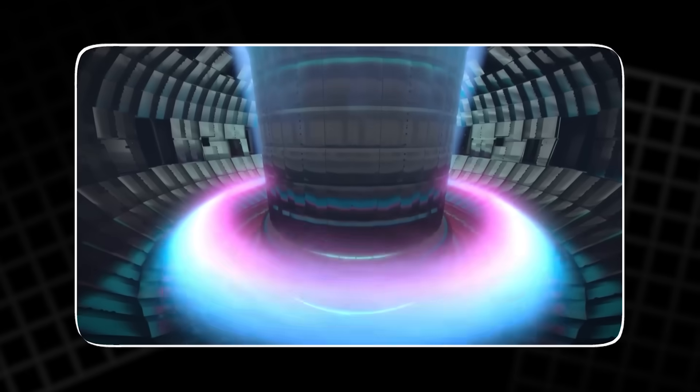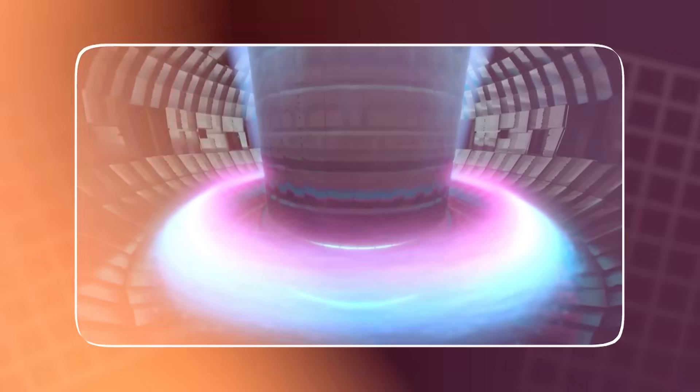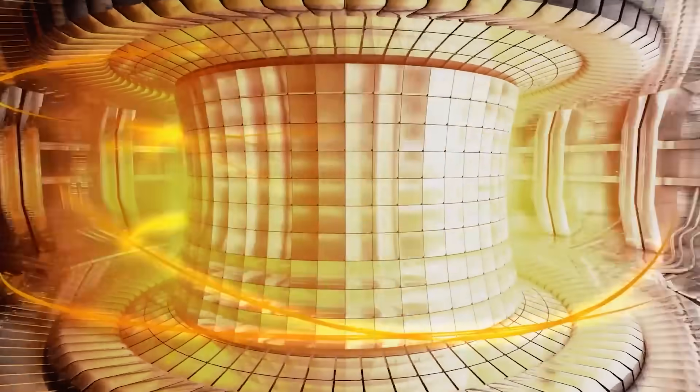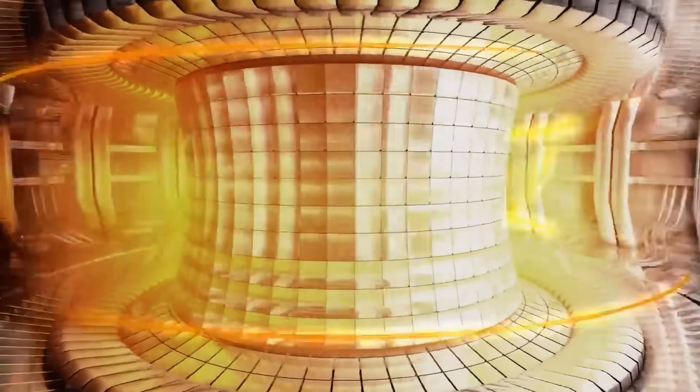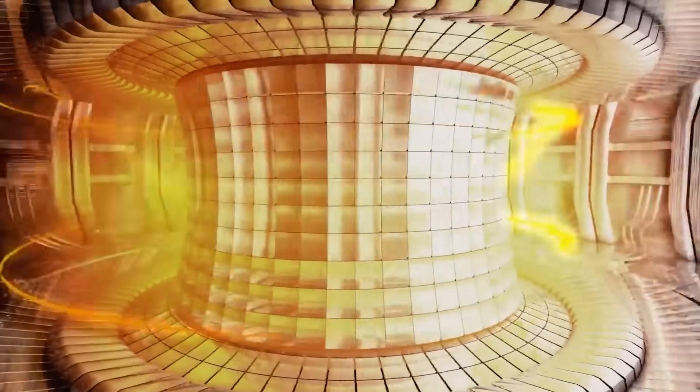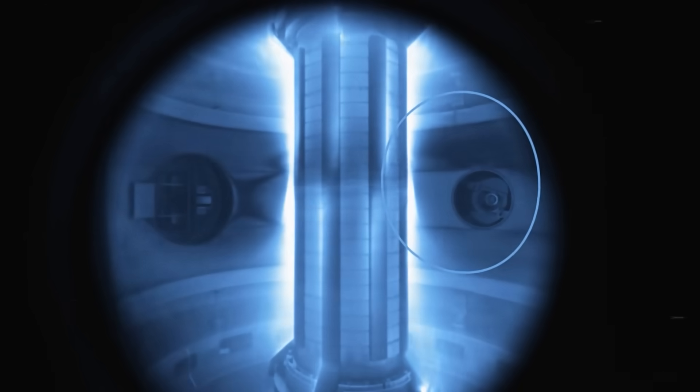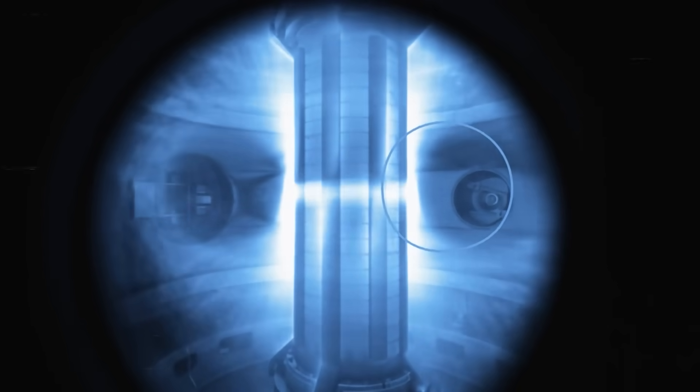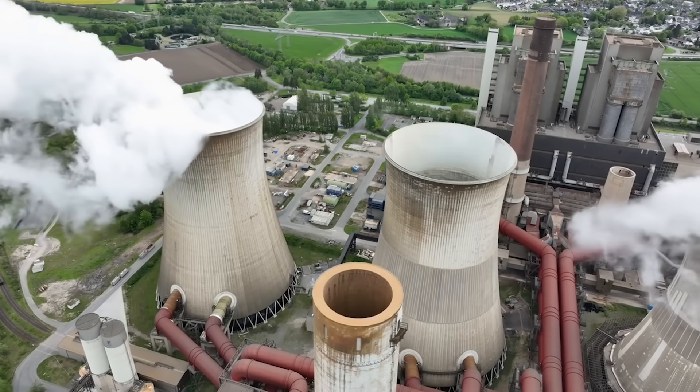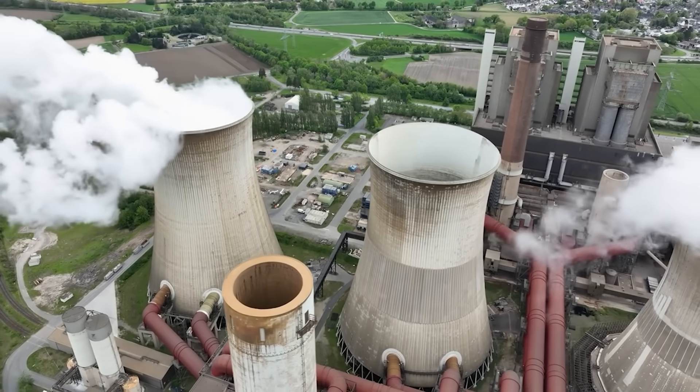But the plasma current is also a weakness. It can trigger sudden events called disruptions, where the current collapses and the plasma slams into the wall. Even if nothing catastrophic happens, the machine must stop, cool, and restart. That makes pulsed operation normal for Tokamaks. A city grid does not like pulses. It likes steady, boring power.